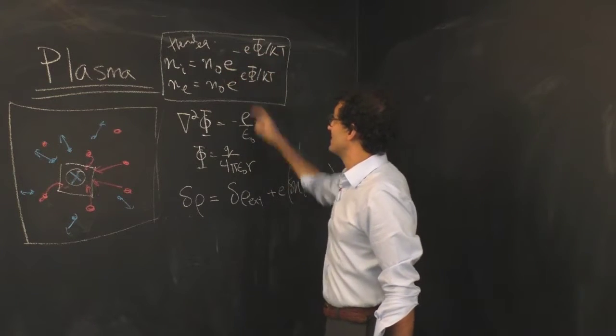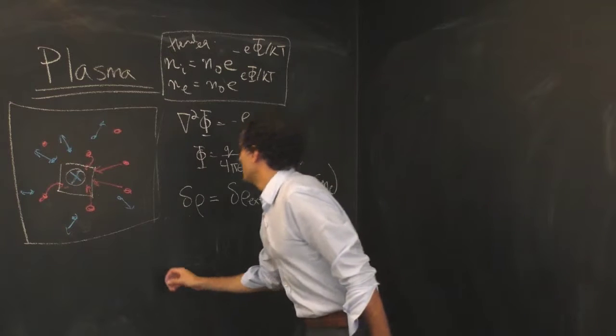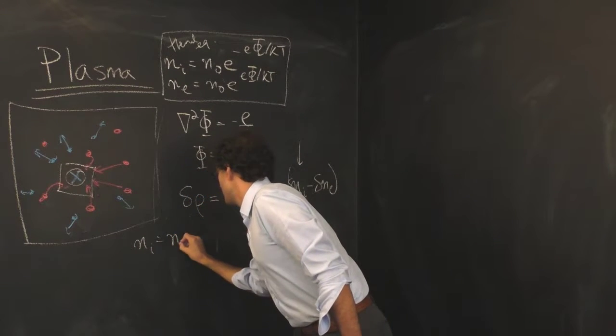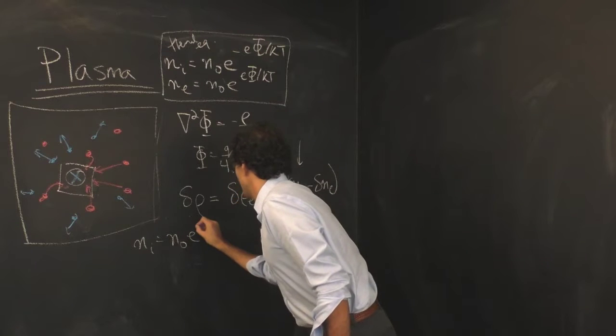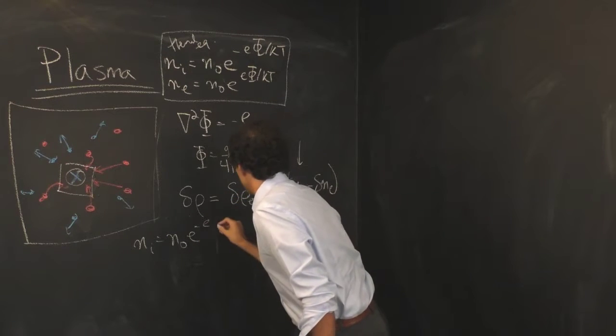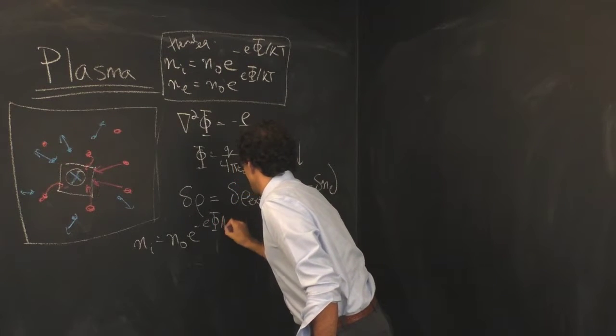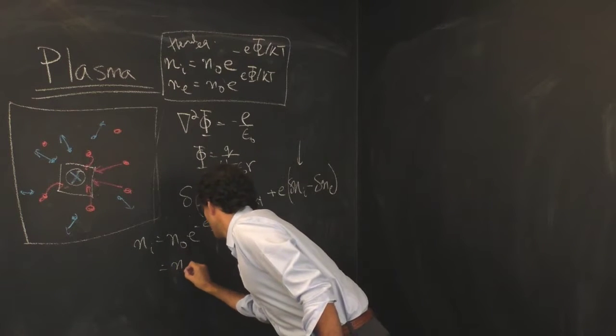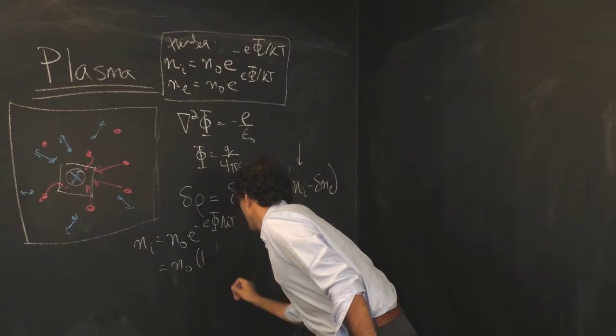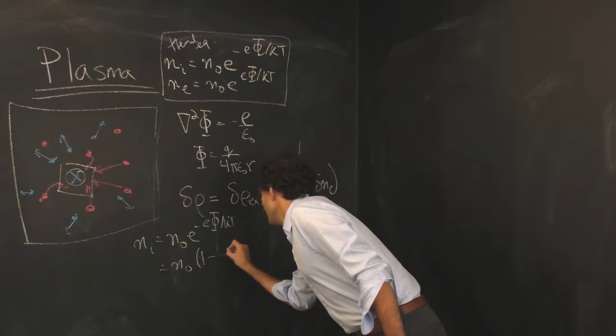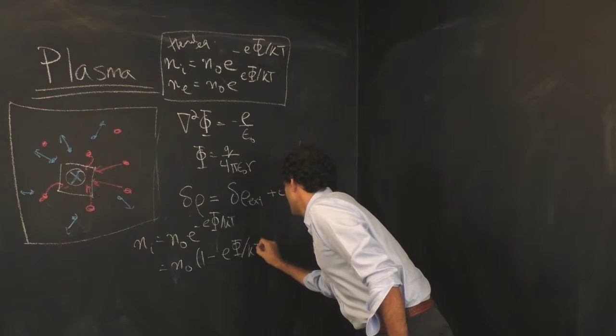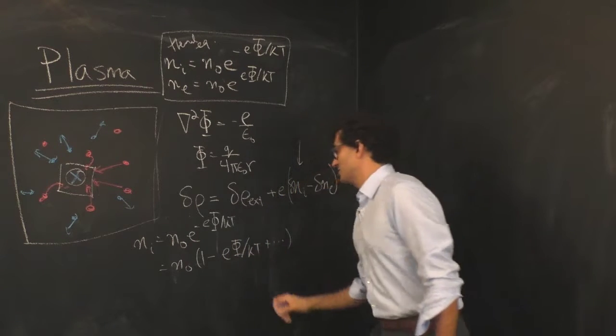The density of ions is now equal to n0, we have the standard term in front, but now I'm going to have that phi there and write it as 1 minus e phi over kT plus some additional terms.